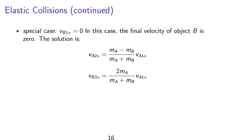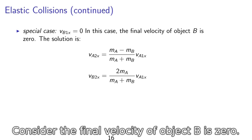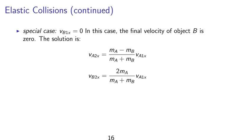If the velocity of object b is zero, then the solution is given by va2x equals ma minus mb over ma plus mb va1x. And vb2x equals 2ma divided by ma plus mb, va1x.